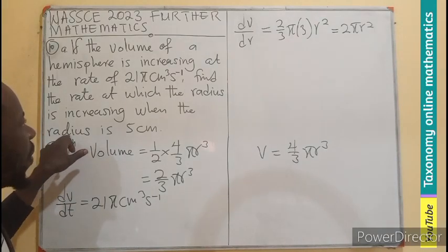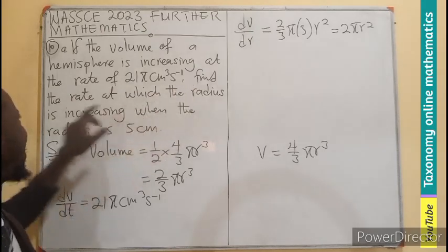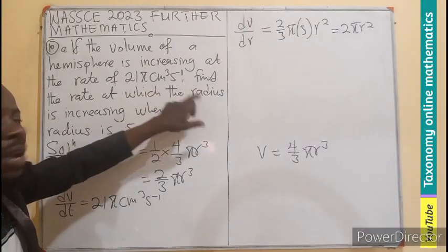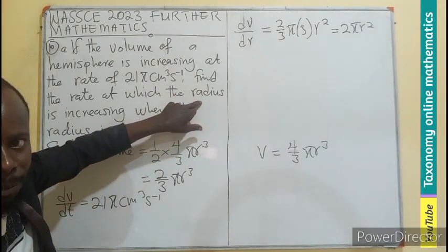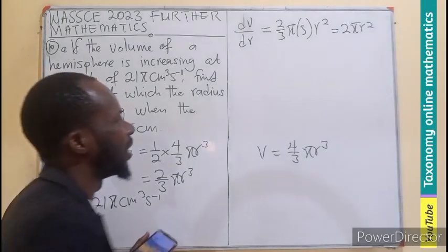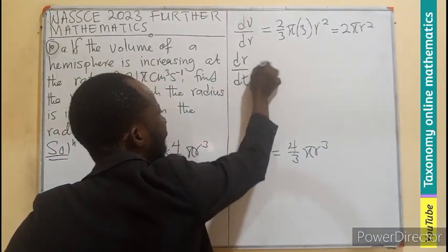So we need to also find the change in what? Radius. Find the rate of change. The rate of change of radius with respect to time. The change of radius with respect to time. So that is the next thing to find, which is the rate of radius with respect to time.